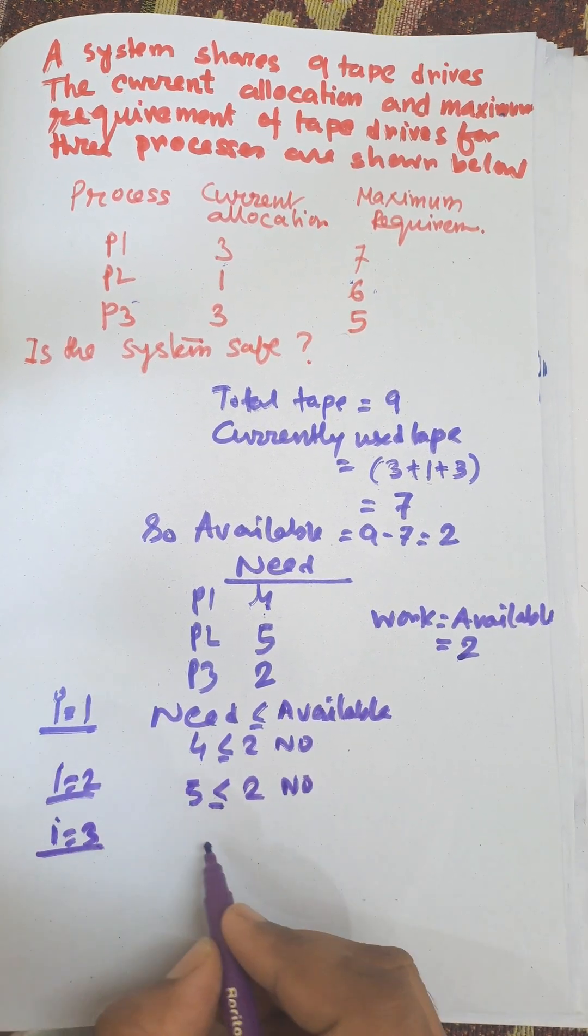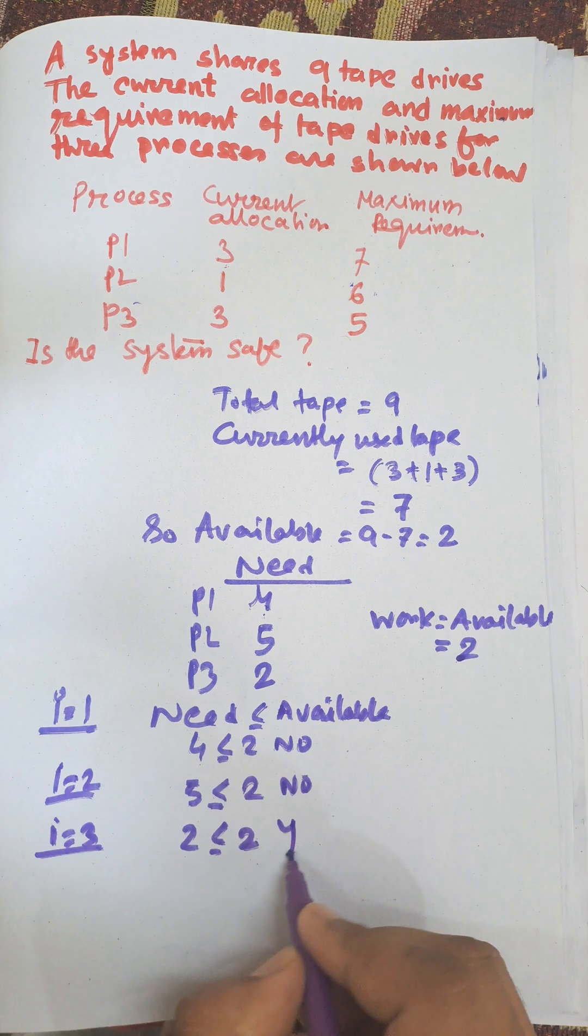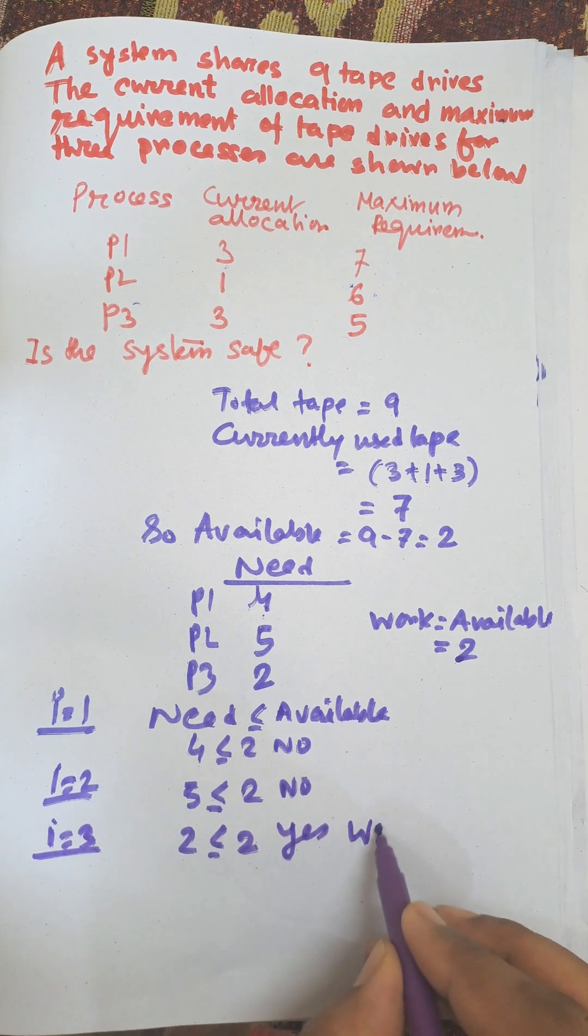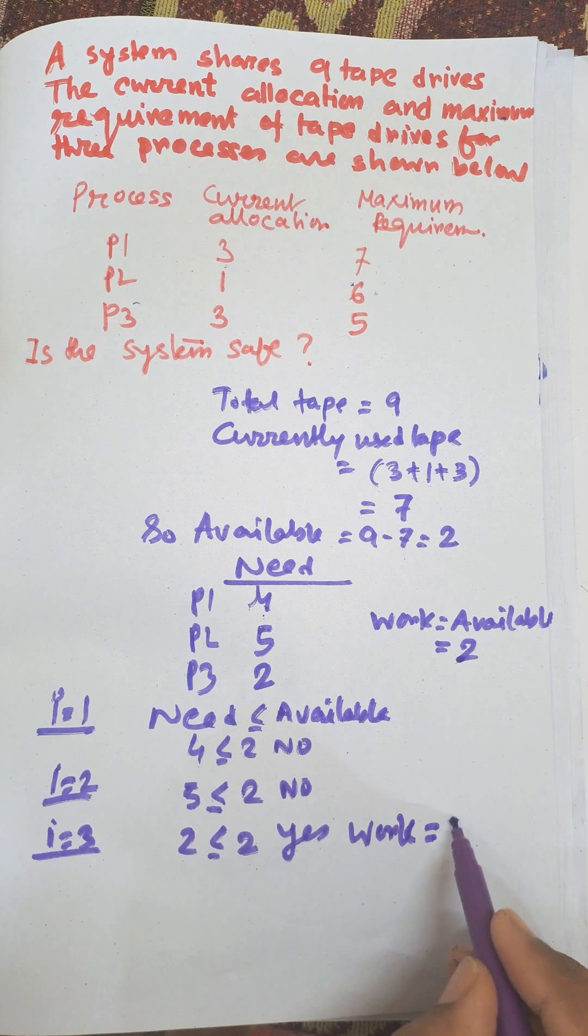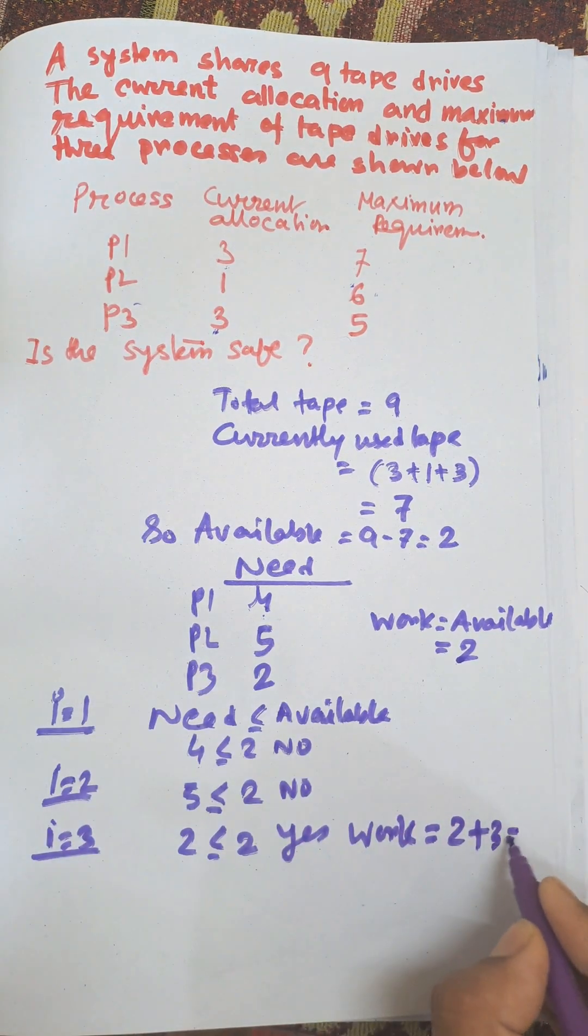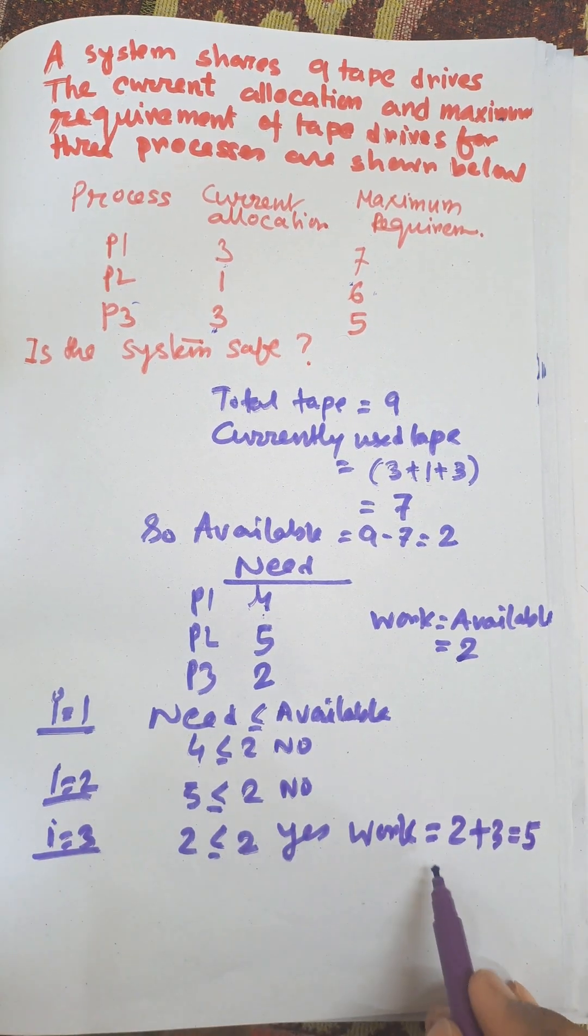For i equals three, two less than or equal to two? Yes. That means work is updated: work equals work plus allocation, that is two plus three equals five. P3 is safe.